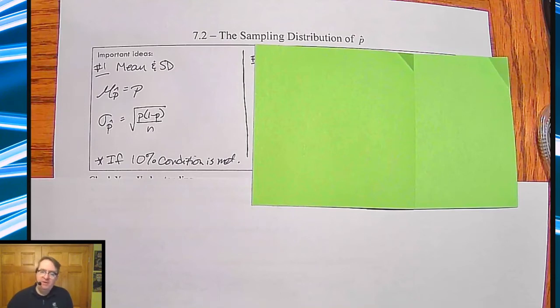Hey, it's Mr. Hayes. We're back formalizing sampling distribution of p hat. It's the first part of the second part of chapter seven, which is in unit five of AP stats.